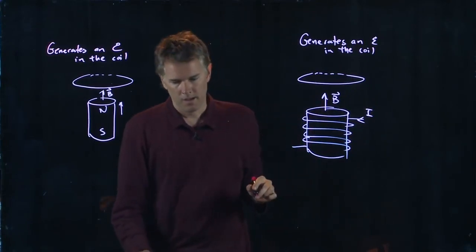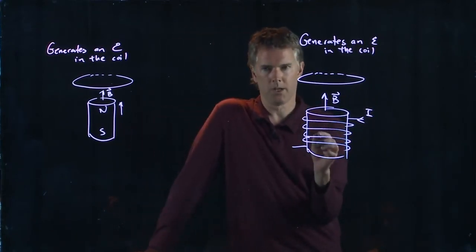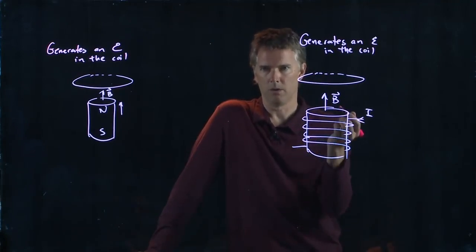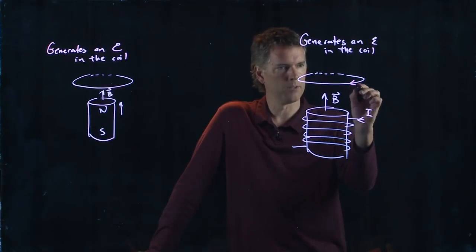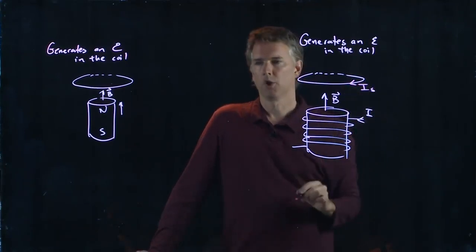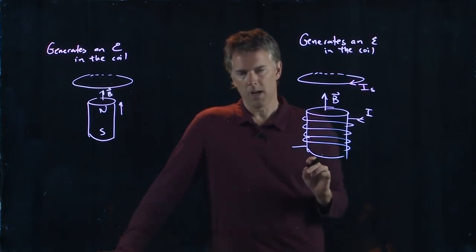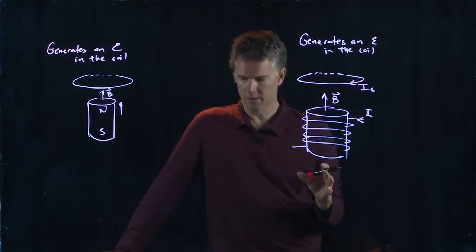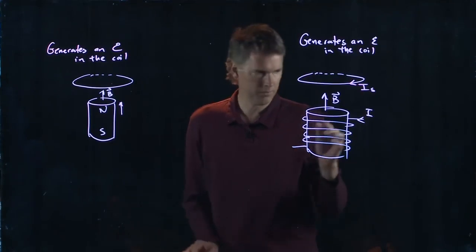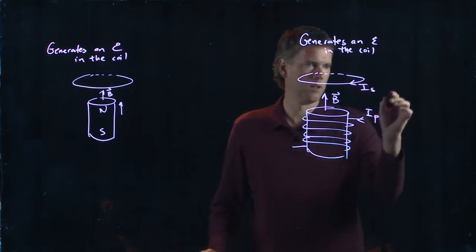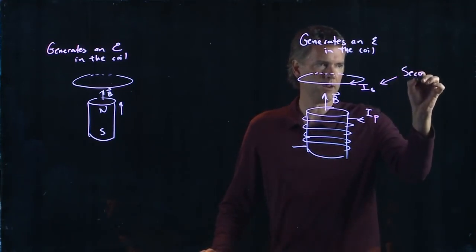And in fact we know what direction it is. If B is increasing going up then the coil is going to want to oppose that and so it's going to have a current in the opposite direction. And now here's the cool thing, right? Let's call this current in the solenoid the primary and let's call this one the secondary.